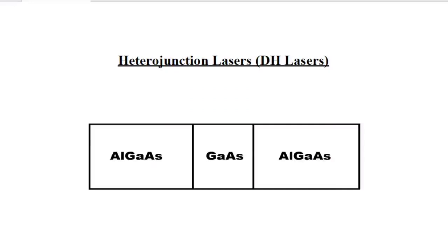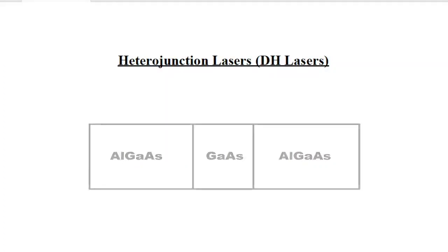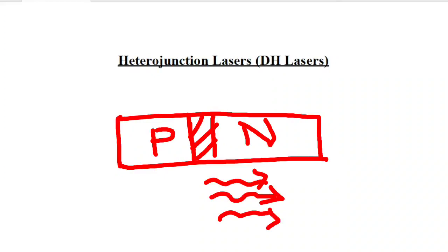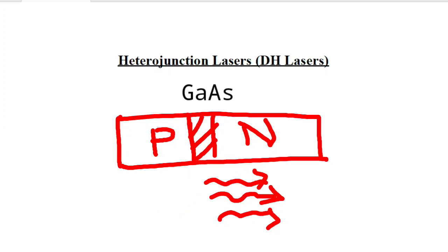Hello everyone. Today we will discuss heterojunction lasers, or double heterojunction lasers, also known as DH lasers. You may be familiar with homojunction lasers — it is nothing but a p-n junction made up of a direct bandgap semiconductor material. There will be an active region at the interface where recombinations occur, and photon generation leads to amplification and stimulated emission of laser light.